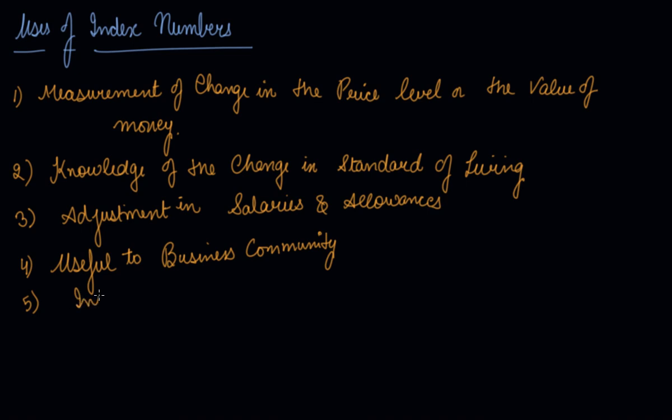Information regarding production. The index number of production shows whether the level of agricultural and industrial production in the economy is increasing or decreasing. From what price it is increasing or decreasing. Accordingly, agricultural and industrial development policies can be framed.